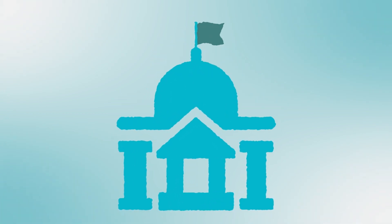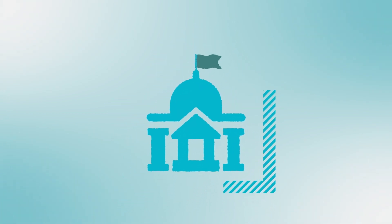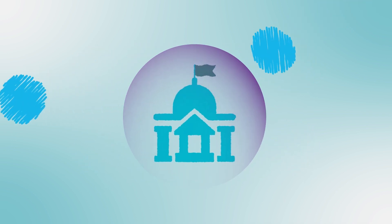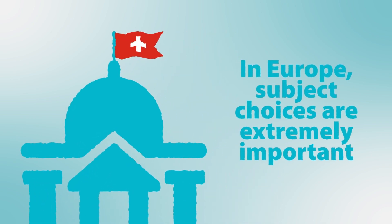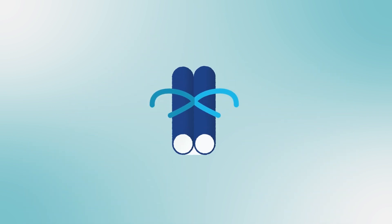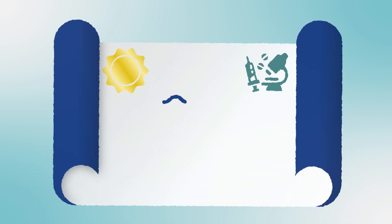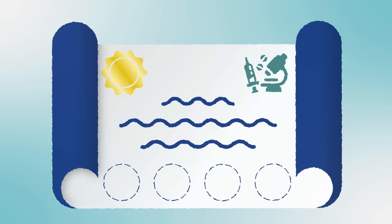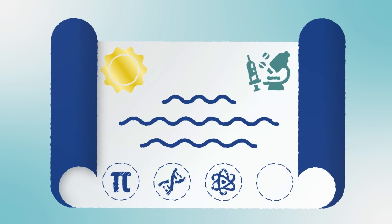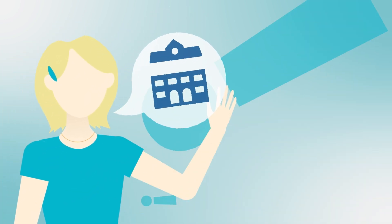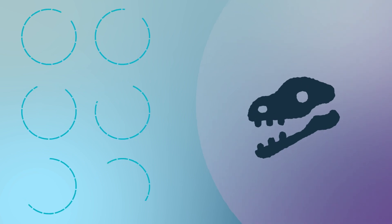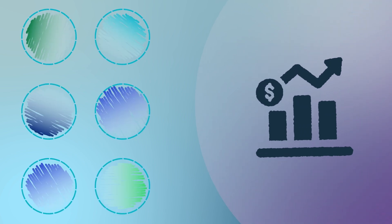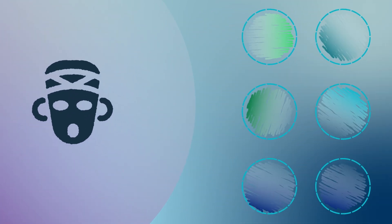It's important to know that to study at university in some countries, there are required subjects for entry and some other subjects that are not permitted. If you're planning to study in Europe, particularly in Germany or Switzerland, keep in mind that subject choices are extremely important. University degrees in medicine and science in certain countries may require a specific combination, such as a particular mathematics and all three science subjects. Talk to your school about how you can achieve this. You may be able to add a seventh subject or complete the non-regular diploma. Social science degrees allow more flexibility, but may also require a certain mathematics subject. Liberal arts and humanities degrees normally allow for the most flexibility.